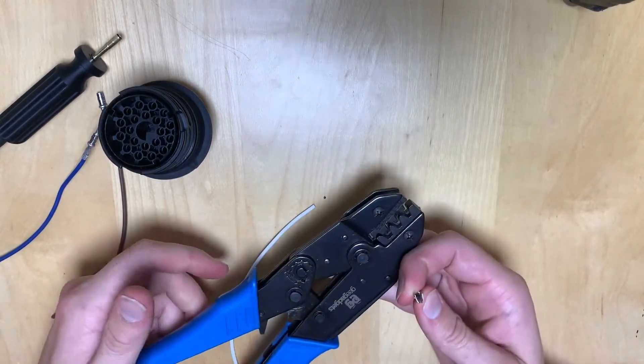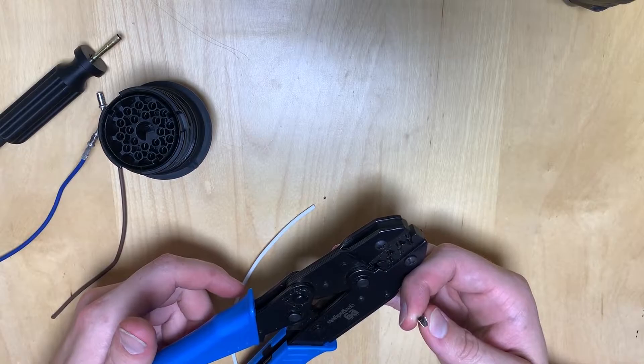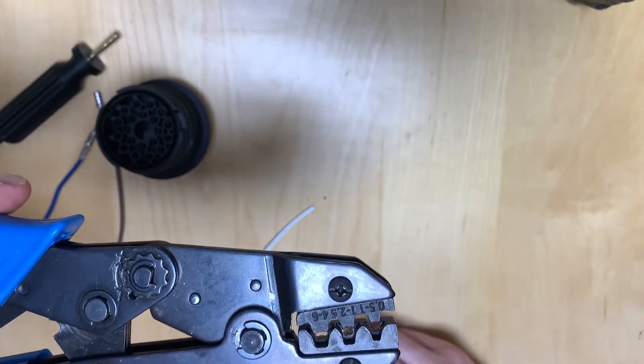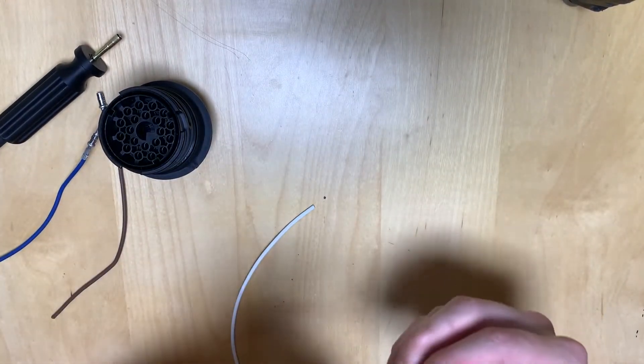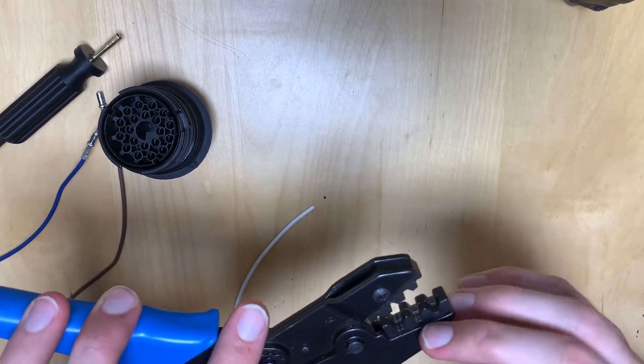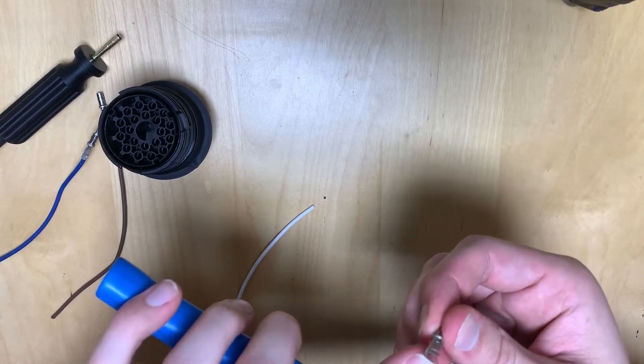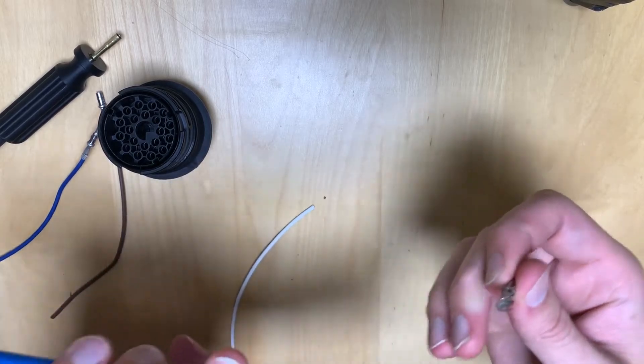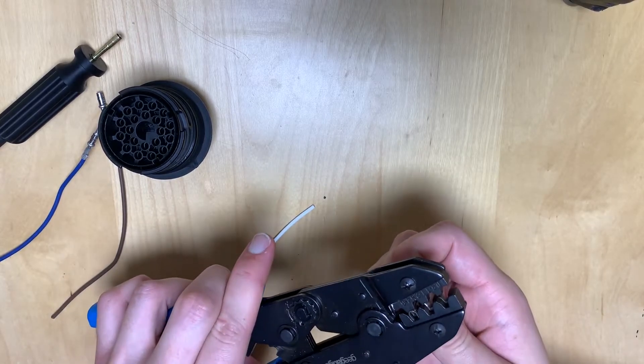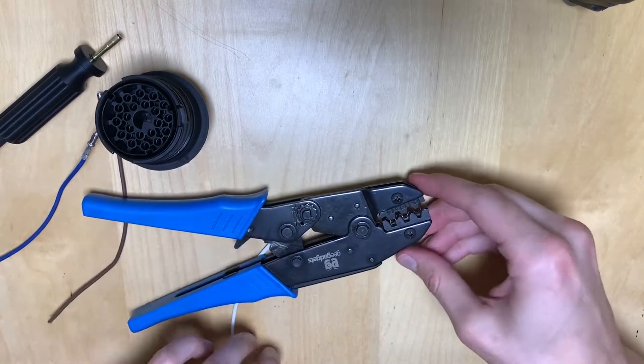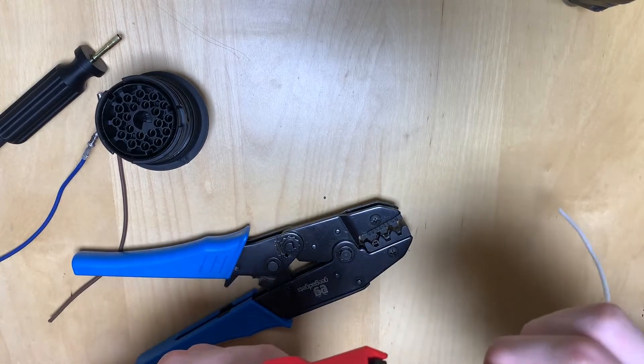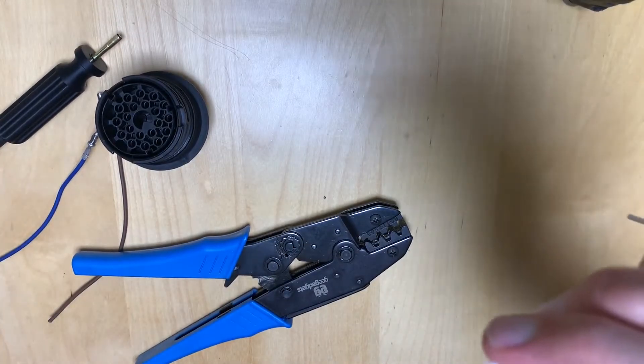If you do want to crimp it down mechanically, you can get a pair of these crimpers on Amazon for pretty cheap—like 25 bucks—and you get multiple different jaws. This is the jaw type you're going to want to use for these connectors. The large channel in the front is where you're going to put the back end of the connector, and the channel up here in the front is going to go in the smaller section. You want to get your wire ready—strip off a very little amount, you don't really need a lot.